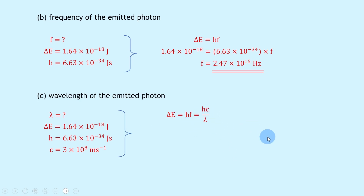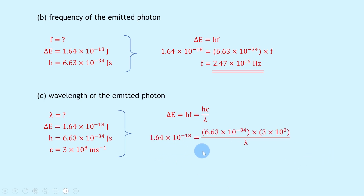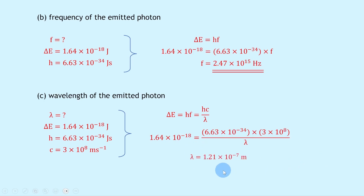This equation was derived in the theory video: rearranging v = fλ gives f = v/λ, or f = c/λ for light. Substituting in: 1.64 × 10⁻¹⁸ = (6.63 × 10⁻³⁴ × 3 × 10⁸) / λ. Rearranging gives λ = (6.63 × 10⁻³⁴ × 3 × 10⁸) / (1.64 × 10⁻¹⁸), which gives λ = 1.21 × 10⁻⁷ meters, or 121 nanometers.